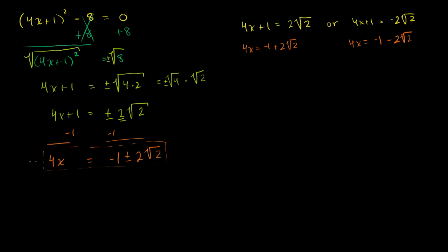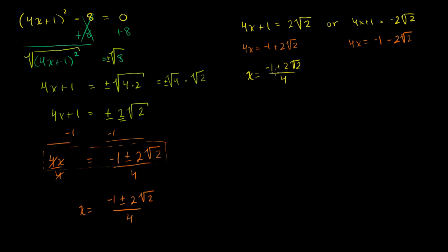Last step: we just have to divide both sides by 4. So you divide both sides by 4, and you get x is equal to negative 1 plus or minus 2 times the square root of 2, all over 4. This is completely equivalent to x equals negative 1 plus 2 root 2 over 4, or x equals negative 1 minus 2 root 2 over 4. And if you want, I encourage you to substitute one of these back in, just so you feel confident that something as bizarre as one of these expressions can be a solution to a nice vanilla-looking equation like this.